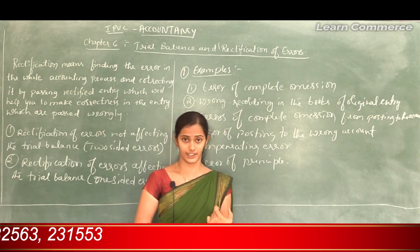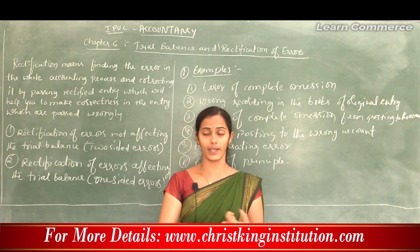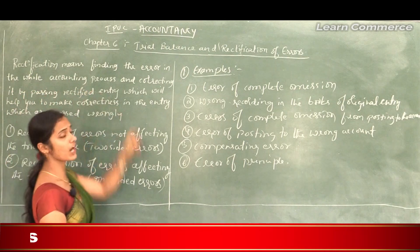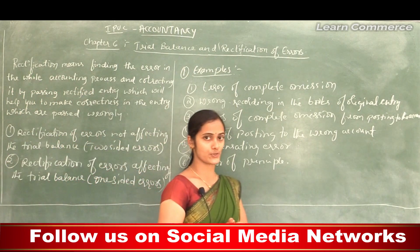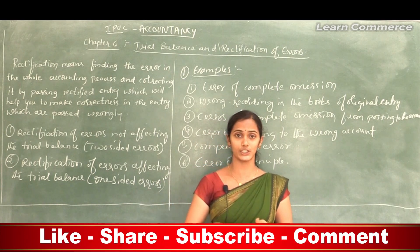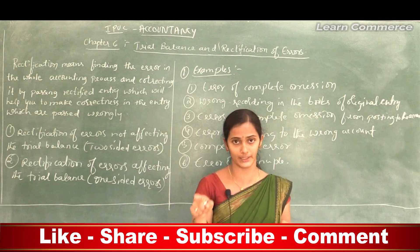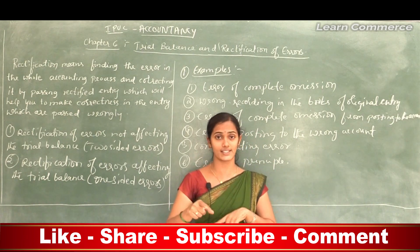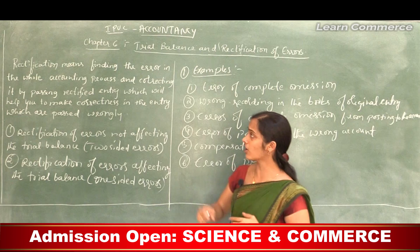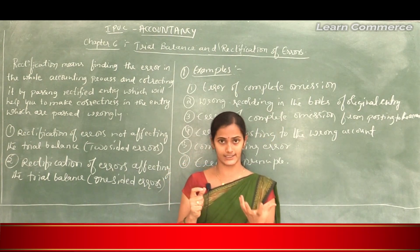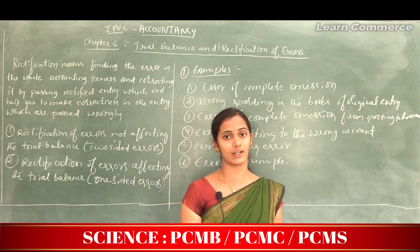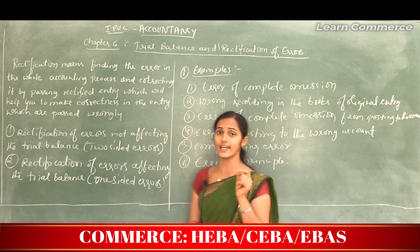Let's see the exact meaning of rectification of errors. In simple words, rectification means finding errors in the whole accounting process. The accounting process includes identification of transactions, communicating the accounting information, taking important decisions, and finding out economic events. If any error is done by an accountant, that mistake is to be found out before or after preparing the trial balance in the accounting process.